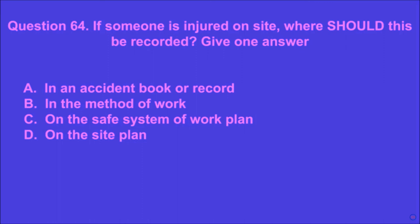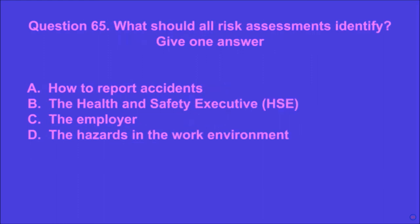Question 64: If someone is injured on site, where should this be recorded? Give one answer. A: in an accident book or record, B: in the method of work, C: on the safe system of work plan, D: on the site plan. A is the correct answer.